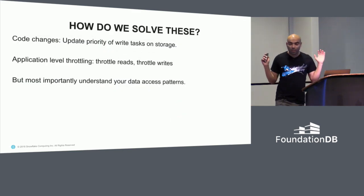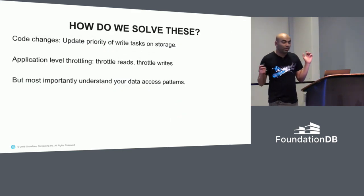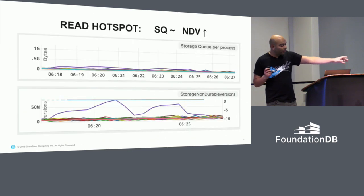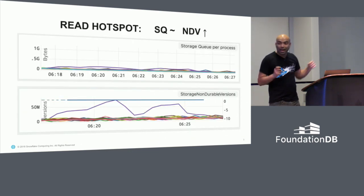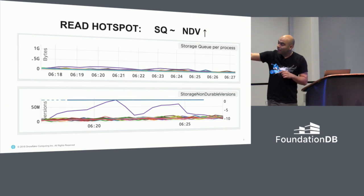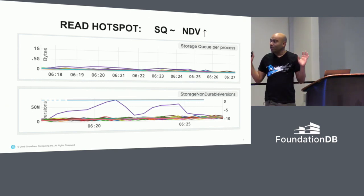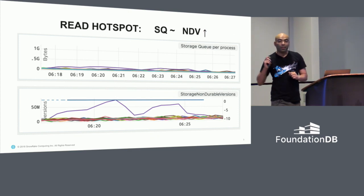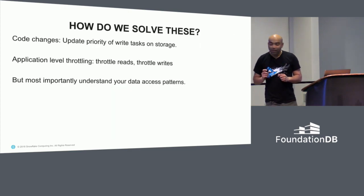So how do we solve these problems? We made a code change which changes the priority of the write tasks. You will see this in the previous slide — that solid line up top in the lower chart — where we saw writes were not getting pushed at all, so we increased the priority of writes over reads. That helped us a lot.